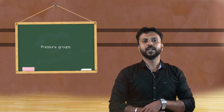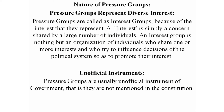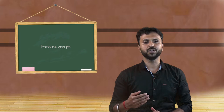Nature of pressure groups. Pressure groups represent diverse interests. Pressure groups are called interest groups because of the interests that they represent. An interest is simply a concern shared by a large number of individuals. An interest group is an organization of individuals who share one or more interests and who try to influence decisions of the political system so as to promote their interests — whether political, personal, or business interests.